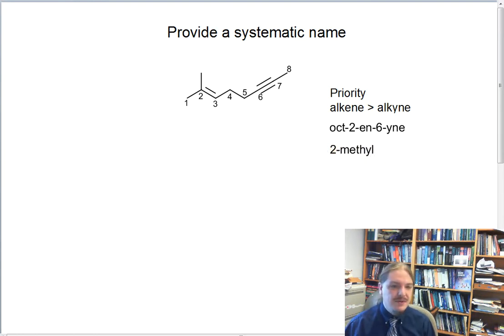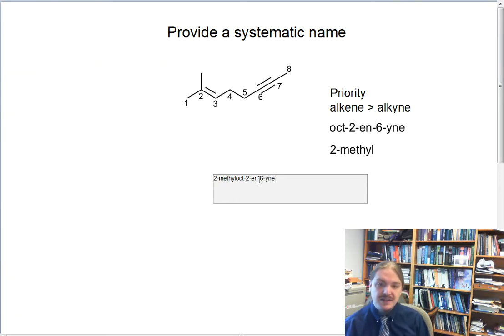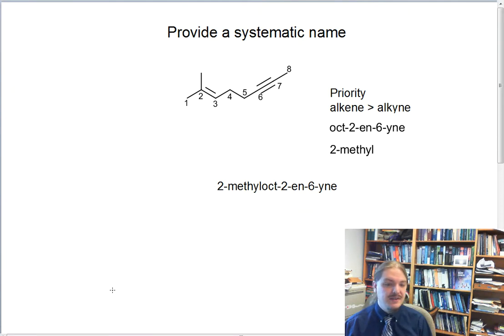We appear to have a methyl substituent at carbon two. Now all we have to do is assemble this into a name. This is 2-methyl-oct-2-en-6-yne. Notice that we don't put the E at the end of en, we just need one E at the end of the name. And there we go: 2-methyl-oct-2-en-6-yne.